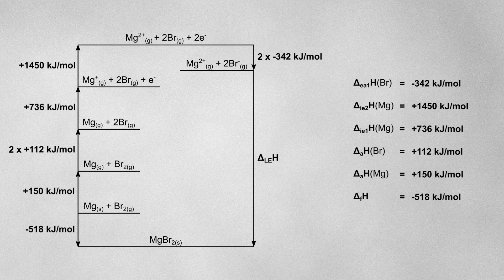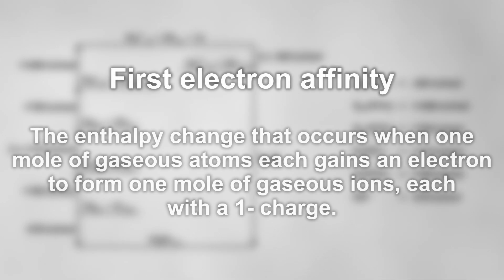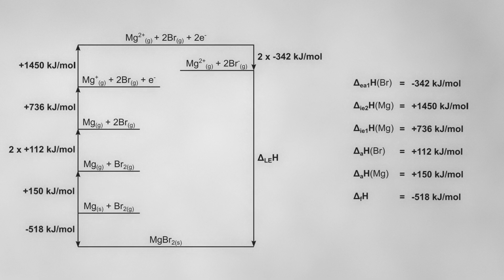Similarly, the first electron affinity for bromine has also been doubled. This is because the definition of the first electron affinity is the enthalpy change that occurs when one mole of gaseous atoms each gains an electron to form one mole of gaseous ions each with a 1− charge. But here there are two moles of gaseous bromide ions forming, so we'll need to double the given value of the first electron affinity for bromine.